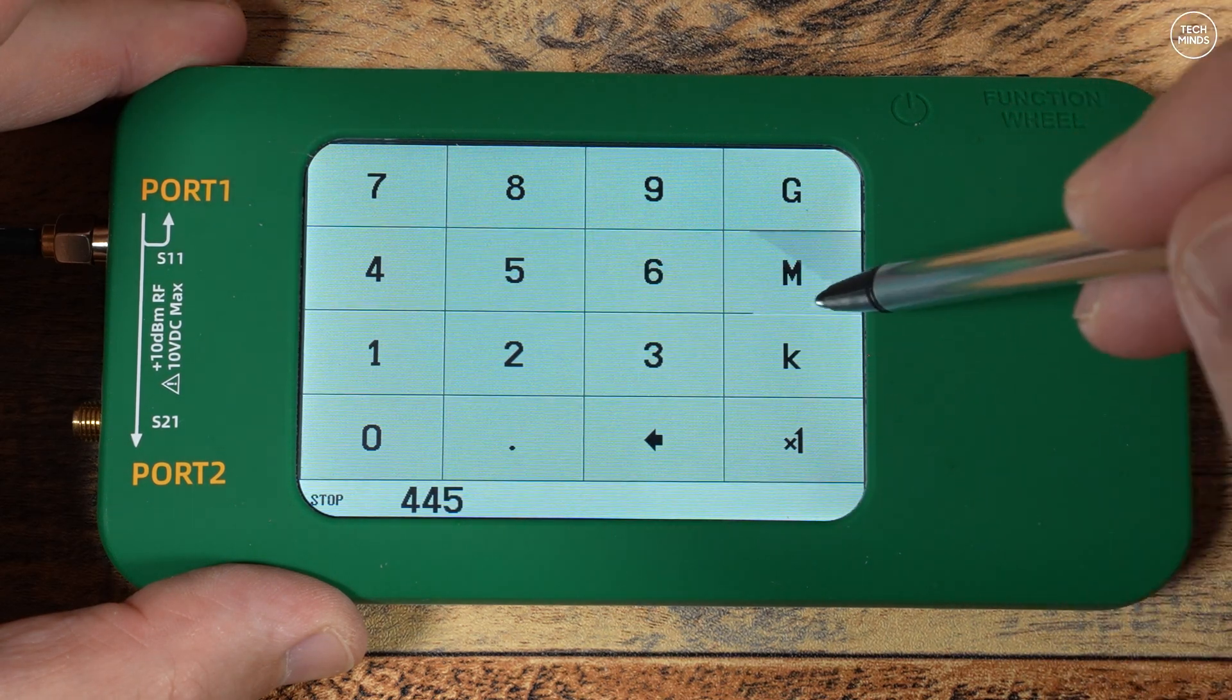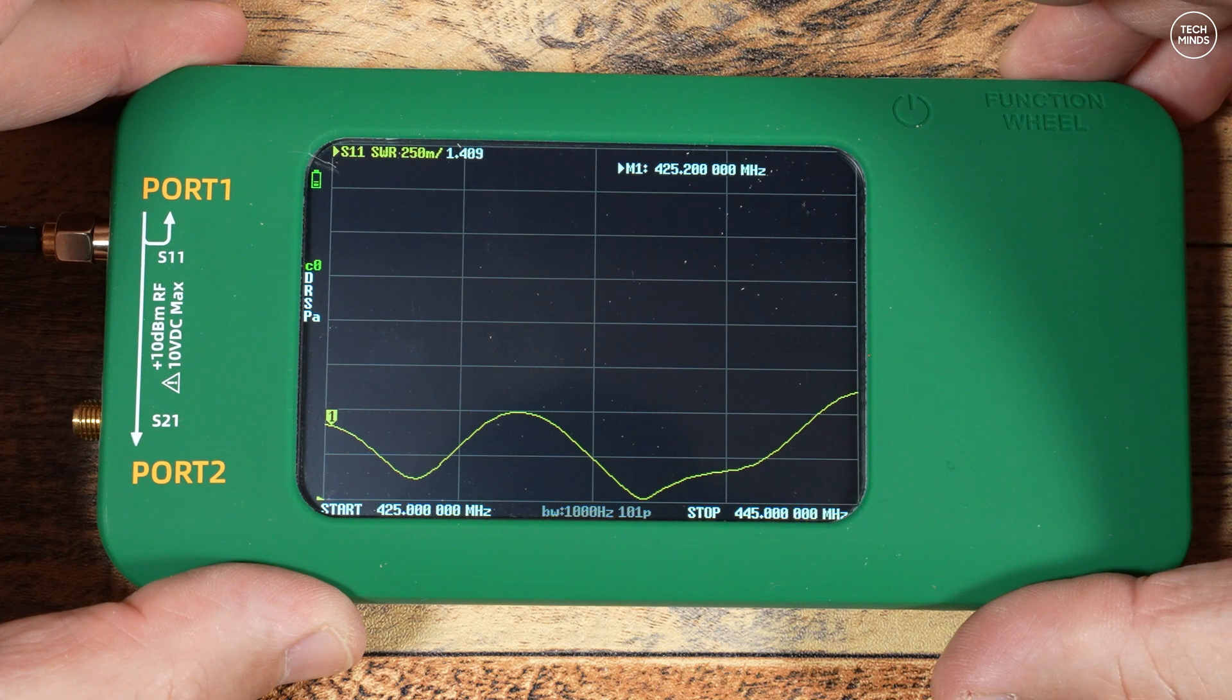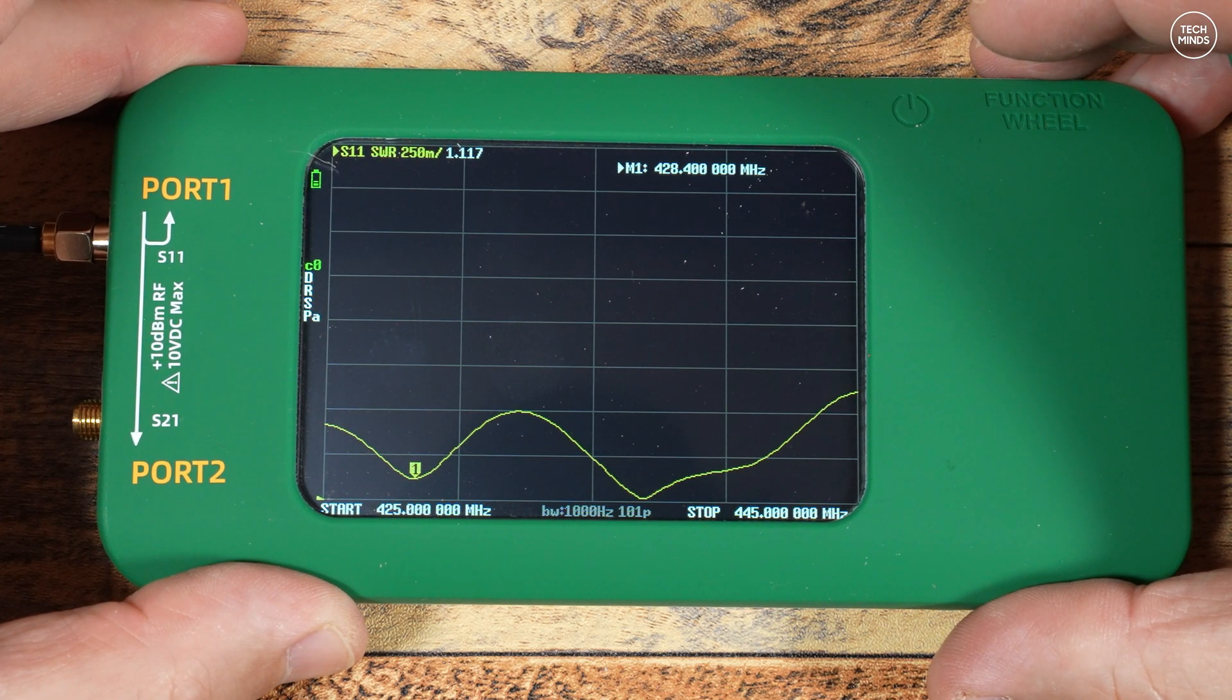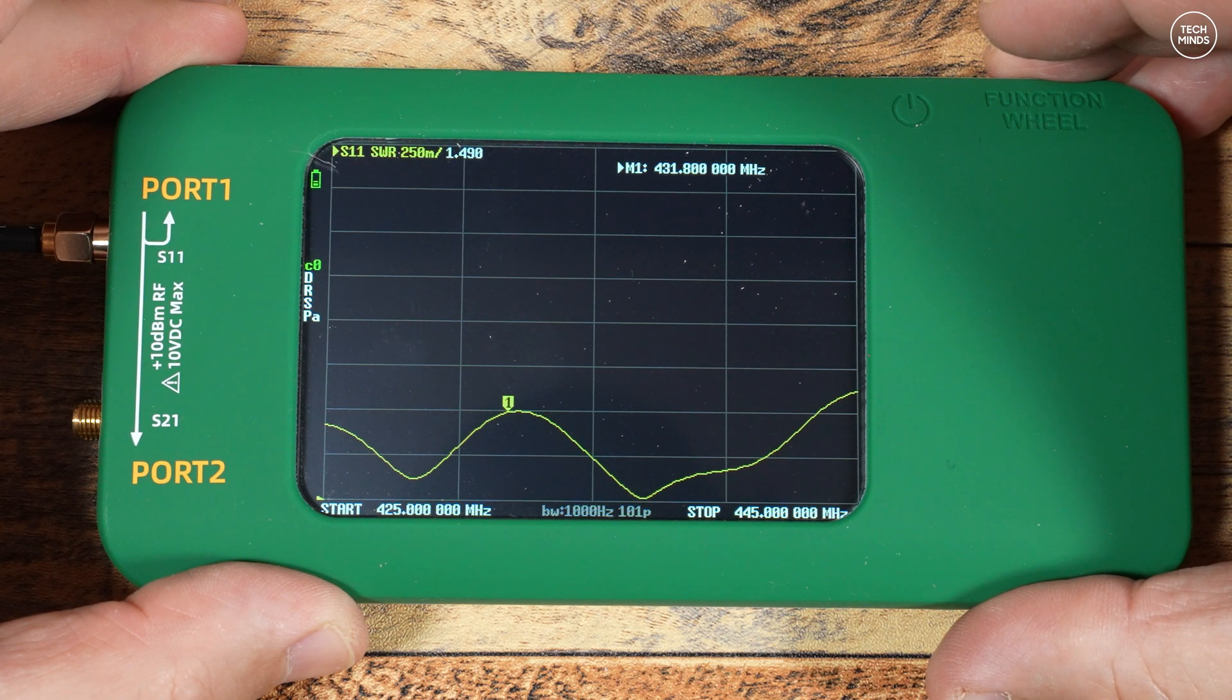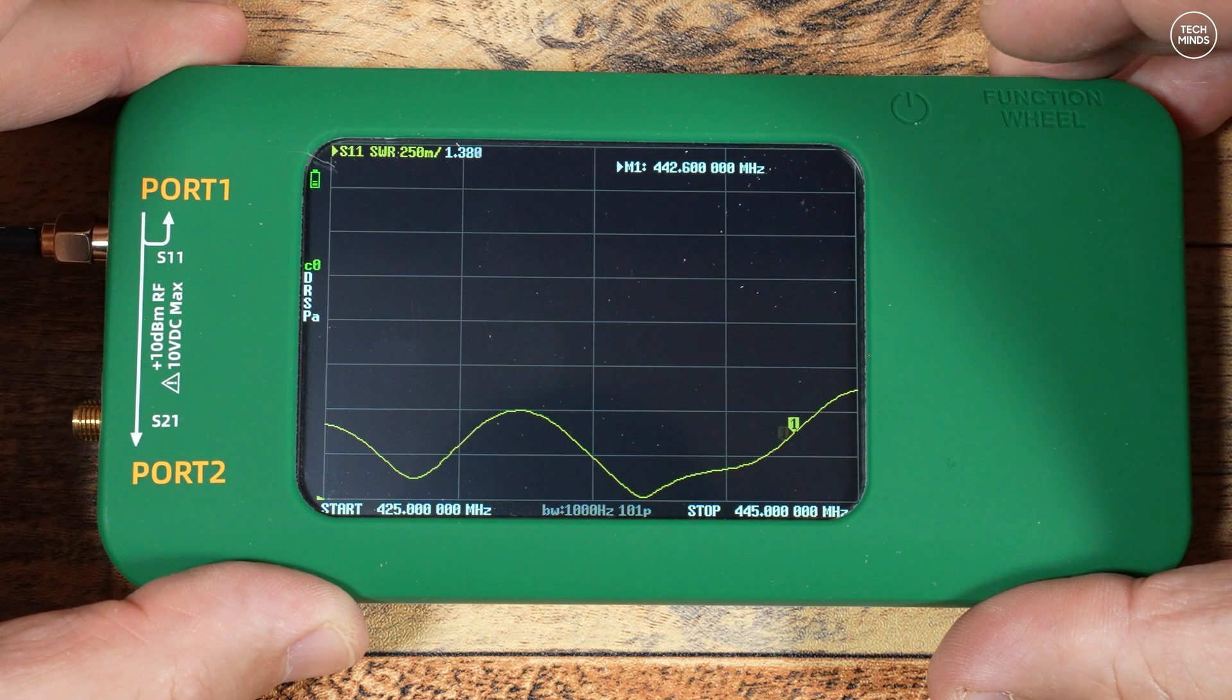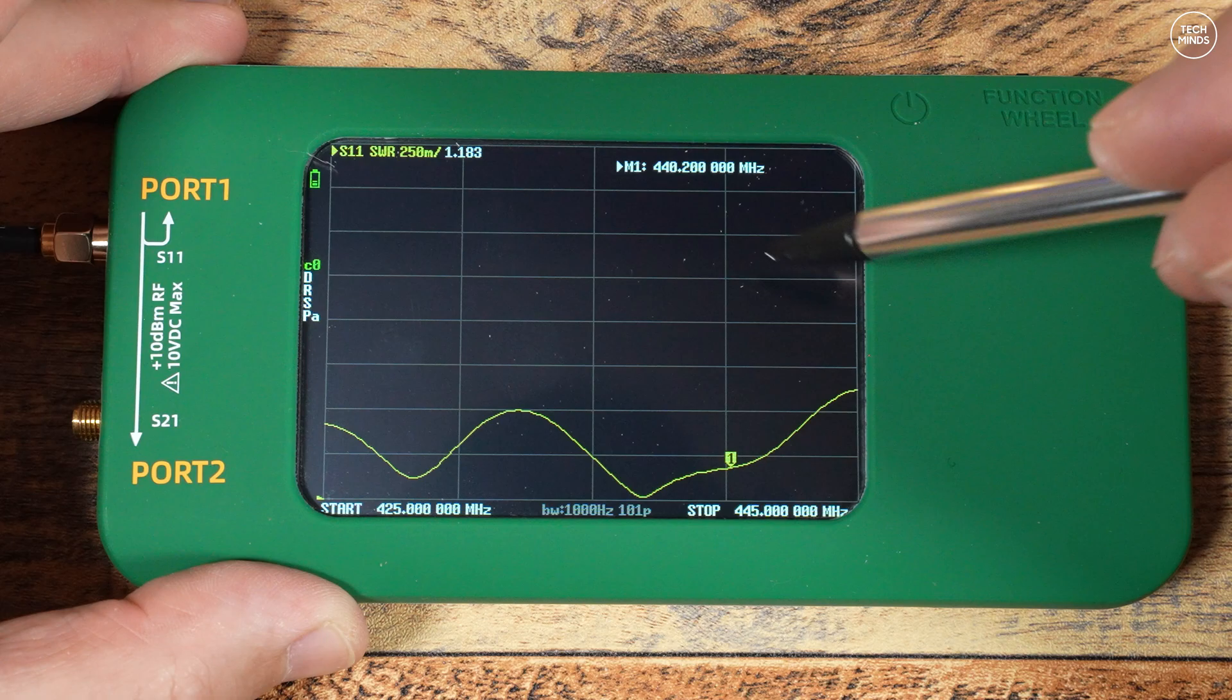My outside antenna also supports receive and transmitting on the 23 centimeter band which is at the top end of 1.2 gigahertz. For this I'll show you the results using the software as I wanted to check if the Nano VNA software was working okay with this device.